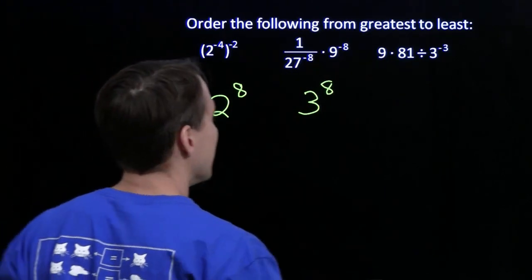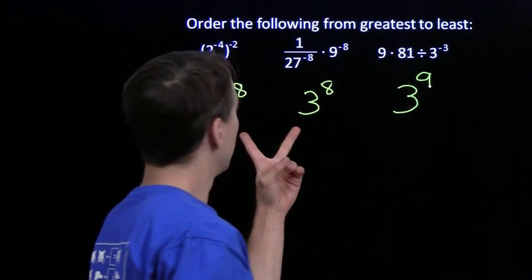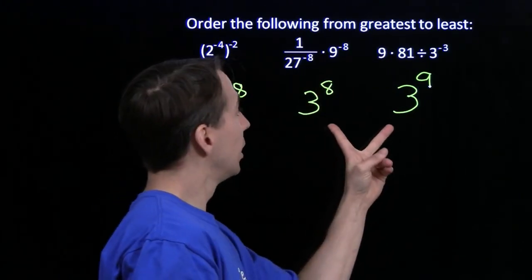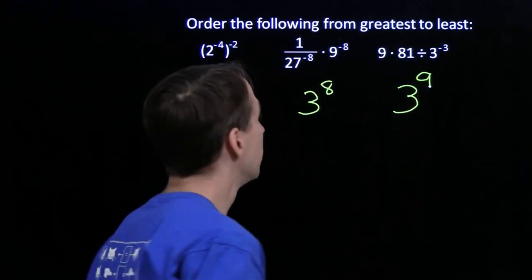And we put that back in our list. And now it's easy to compare the numbers. These two numbers have the same exponent, so the smaller base is smaller. These two numbers have the same base, so the one with the larger exponent is the larger.